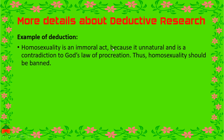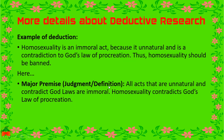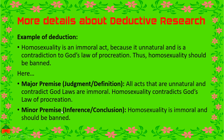Example: Homosexuality is an immoral act because it is unnatural and is a contradiction to God's law of procreation; thus homosexuality should be banned. Here, the major premise or definition is: all acts that are unnatural and contradict God's laws are immoral. The minor premise or inference is: homosexuality contradicts God's law of procreation, therefore homosexuality is immoral and should be banned.